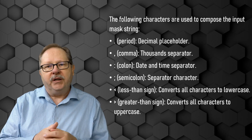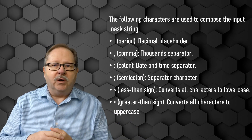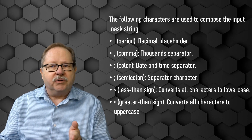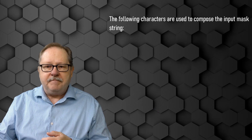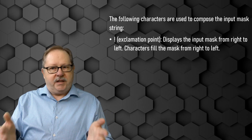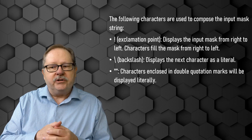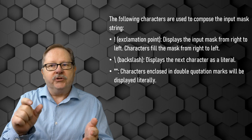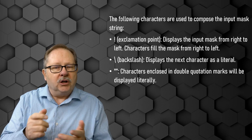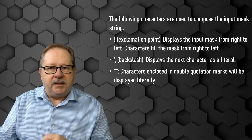When you want people to put in specific upper and lowercase lettering, you can force that. For example, to capitalize the first letter of a name, use the greater-than sign for the first character and then the less-than sign for everything that follows. The exclamation point starts filling in characters from right to left. The backslash defines that the next character is a literal, like an open paren in a telephone number. If you have multiple consecutive literal characters, you can enclose them in quotation marks.